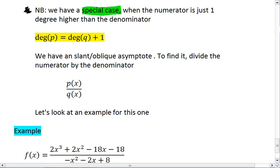Otherwise, you're good to go with what we have done already. This special case, just in case you're wondering, is dealing with a slant or oblique asymptote.